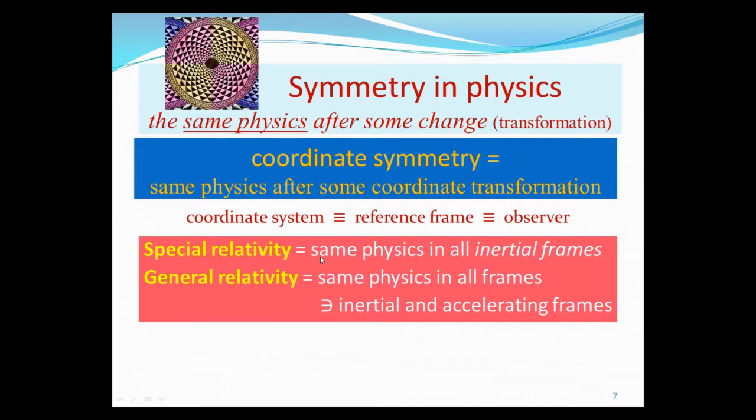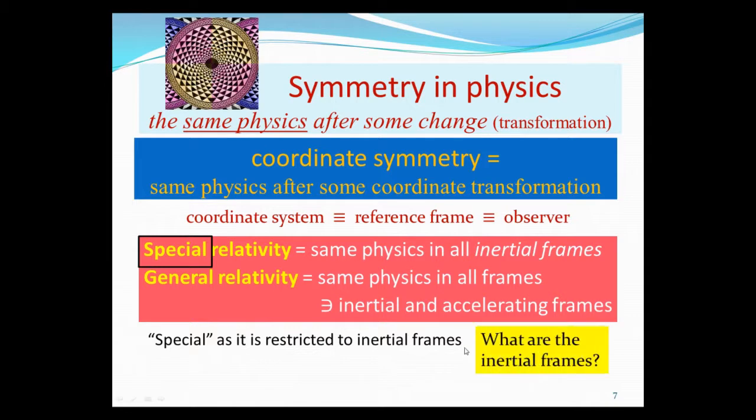By special relativity, we mean that we have the same physics in all inertial frames of reference. And general relativity means we have the same physics in all reference frames, including inertial and accelerated frames. In other words, special relativity is special because we still restrict the reference frame to inertial frames, not all frames, but to inertial frames alone. So the next question is, what are the inertial frames?